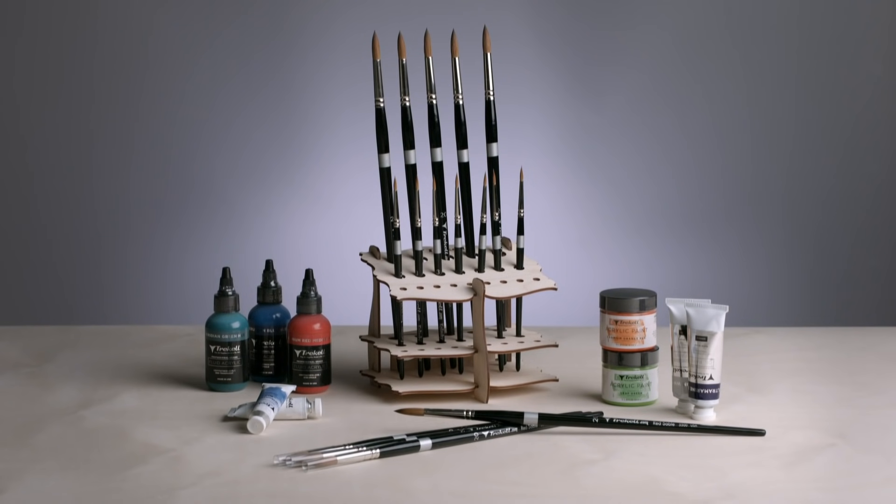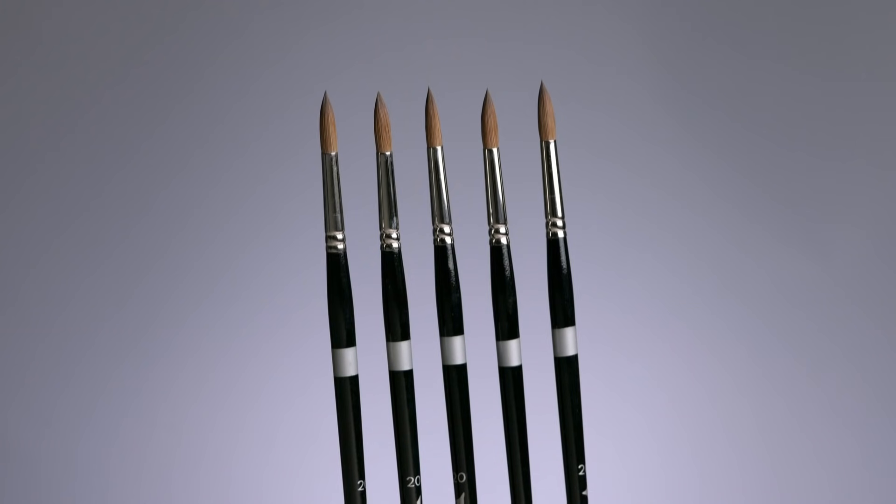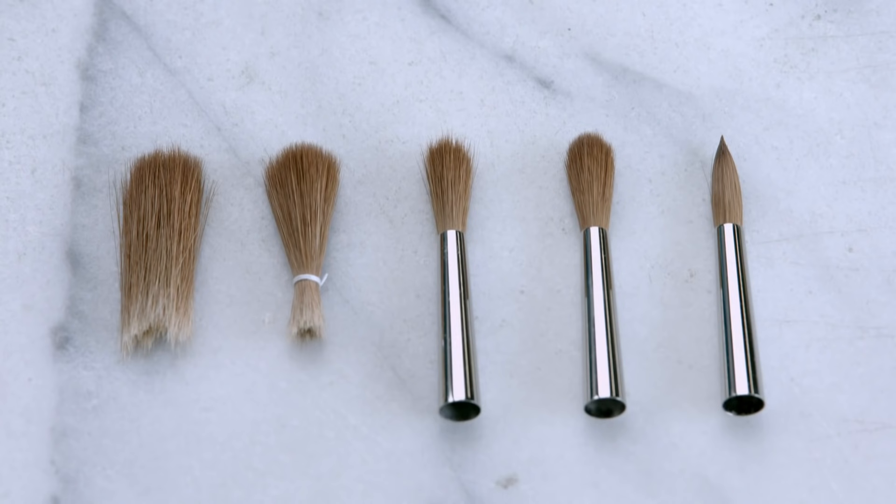These natural hair paintbrushes are made of red sable, the tail hair from a species of weasel. Red sable is renowned for its softness and for spreading paint thinly and evenly.